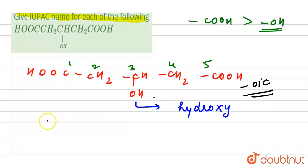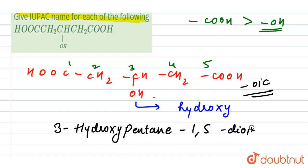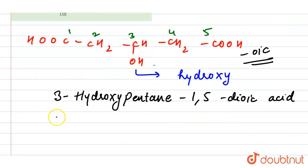It can be written as: now at the third position we have hydroxy, three hydroxy. Five carbons means pentane, so it will be pentane, and it will be one five di oic acid. Or we can write it as three hydroxy pentane, we can also write it like this.